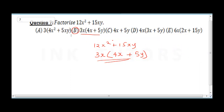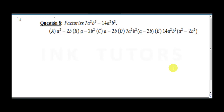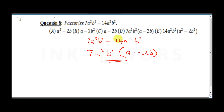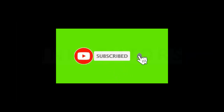Question 8 says factorize 7a cubed b squared minus 14a squared b cubed. Applying the same rule, find what is common: 7 is common to 7 and 14; a squared is common to a cubed and a squared; b squared is common to b squared and b cubed. Bringing out 7a squared b squared: dividing the first term leaves a, and dividing the second term gives 2b. The final answer is 7a squared b squared(a minus 2b), and the correct answer is D.